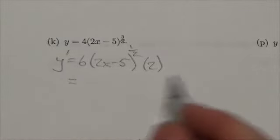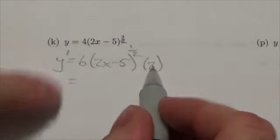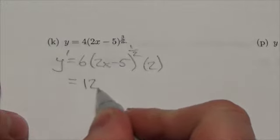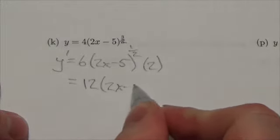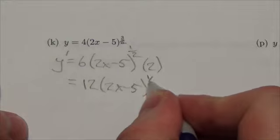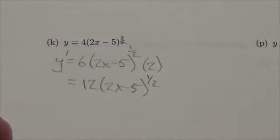Now, the only thing I can really do here to make this simpler is to multiply the two coefficients together. And so I'm going to be left with 12, 2x minus 5 to the 1 half. And that's the expression I'm looking for.